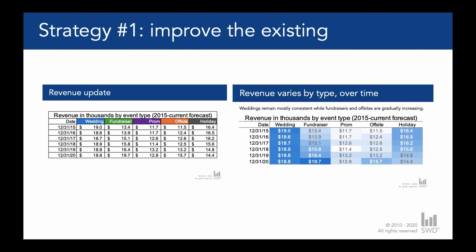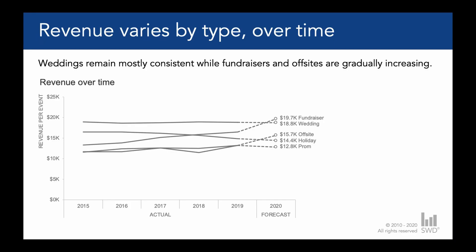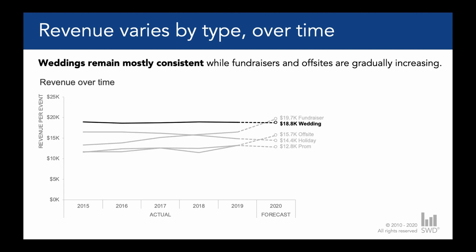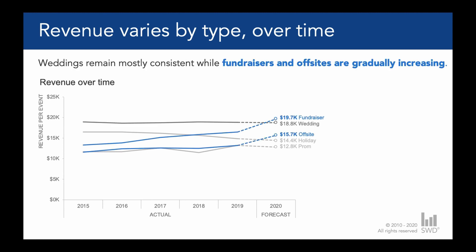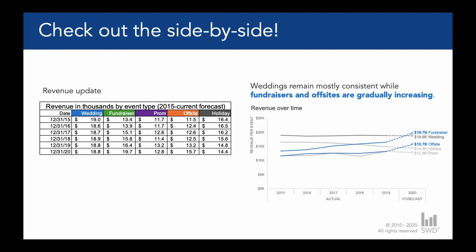How then could we take our audience there? That takes us to our second strategy, which is showing the side by side. Our second strategy builds on our first one — not to take away what's familiar, but actually pair it with what you're suggesting, which in this case is a graph. Notice how much easier it is to intake this information when it's displayed as a graph. That's because graphs interact with our visual system, which is so much faster at processing information. A well-designed graph is going to enable that 'aha' in your audience much faster than a well-designed table, especially when there's an overarching message — for example, that weddings remain mostly consistent and that fundraisers and off-sites are gradually increasing. We could start the conversation with resistant stakeholders by giving them both views paired together to demonstrate the benefits of our improved approach.